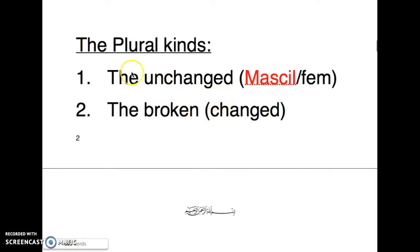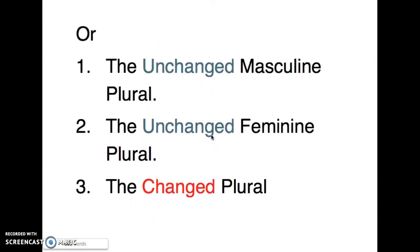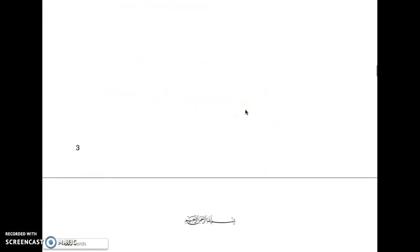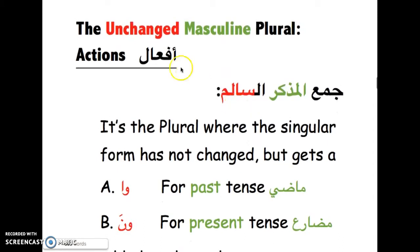If you want to separate them into two or three as we mentioned in lesson number 12 — if you haven't watched it, please go back, because this is a continuation of lesson 12. We're still dealing with the unchanged masculine plural, jama' al-mudhakkar as-salim, when it comes to actions.